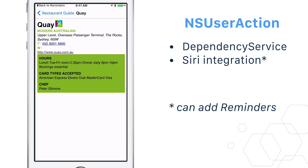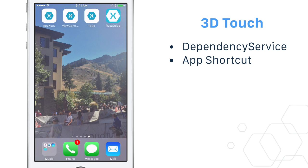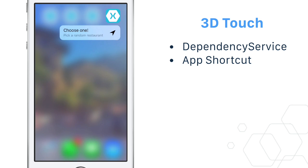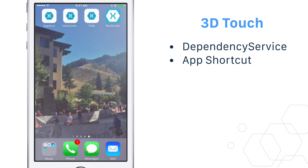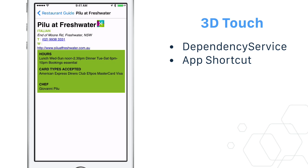Now let's try 3D Touch app shortcuts. There's only one implemented, which displays a random restaurant from the collection. Clicking on it deep links into the app.